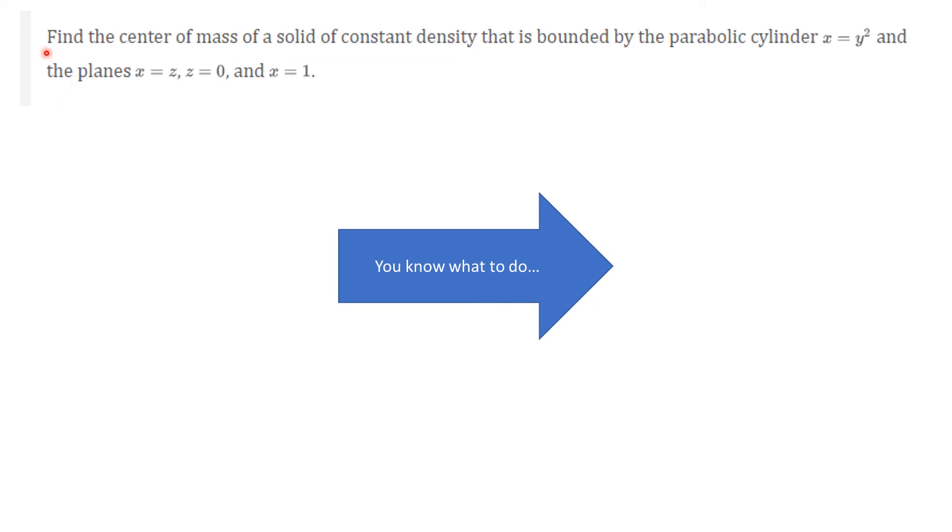I promised you would actually do a calculation. So here I'm asking you to find the center of mass of a solid of constant density. Now this is a simplification because that means rho is equal to a constant. It's just rho. Rho of x, y, z is equal to 1. That is bounded by the parabolic cylinder, x equal y squared, and the planes, x equals z, z equals 0 and x equals 1. So you want to sketch this. You know what to do.